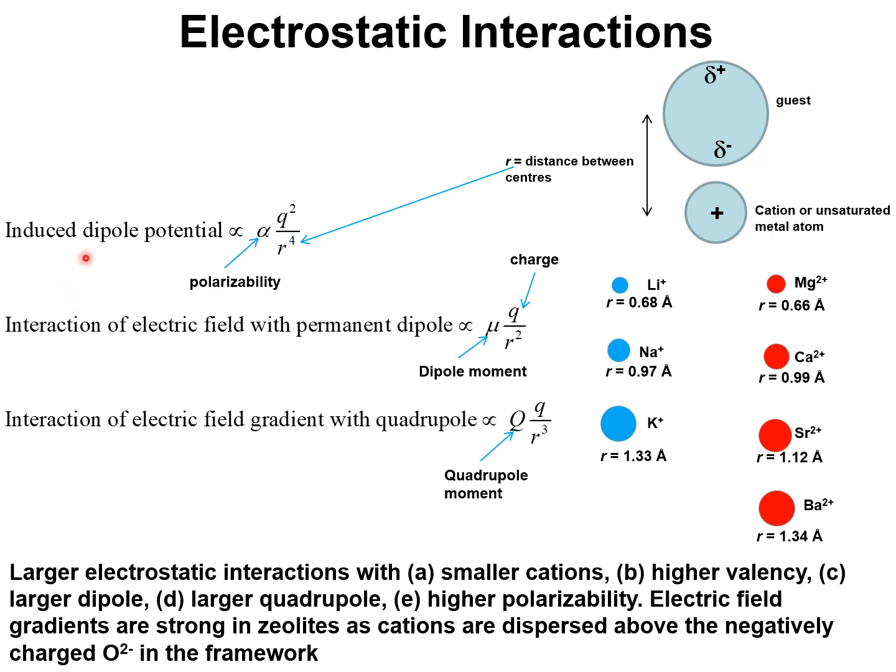Basically, we can distinguish between three types of electrostatic interaction potentials. One due to induced dipoles, the second one due to the interaction of the electrical field with the permanent dipole of the guest molecule.